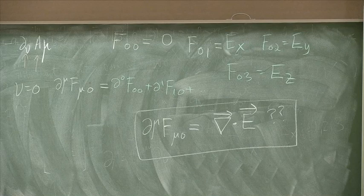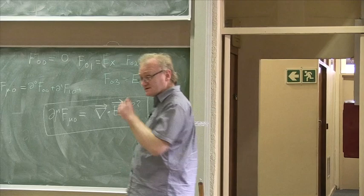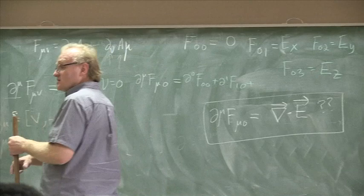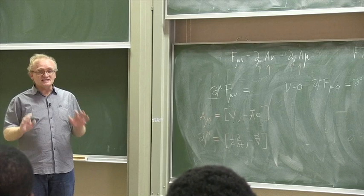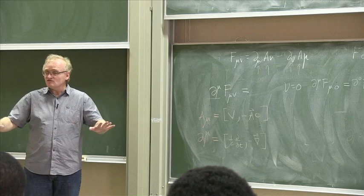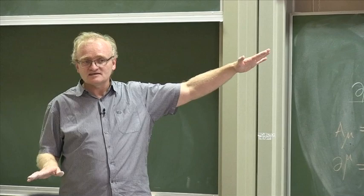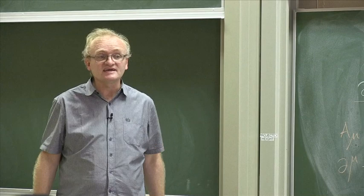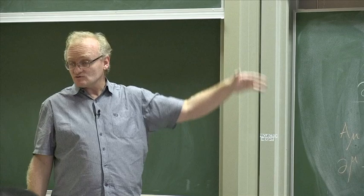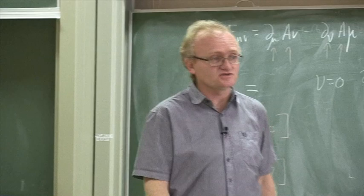When we finish this off tomorrow, we'll have Maxwell's equations in relativistic form. If there are any questions, please ask at the beginning of tomorrow's lecture. Once we have the relativistic form of Maxwell's equations, it will be very easy to show what the formula for the strong nuclear force and the weak nuclear force is — those are examples of gauge theories. This relativistic form is what we want, because it generalizes easily.